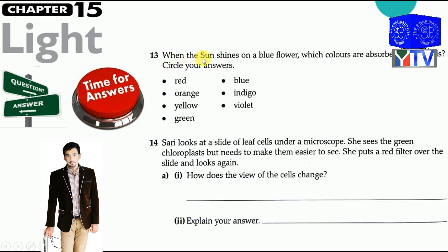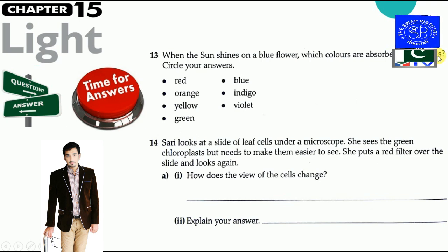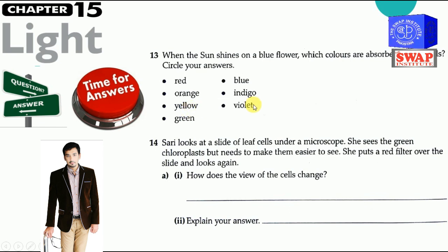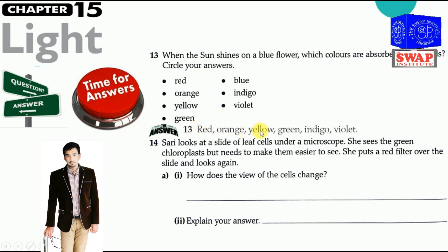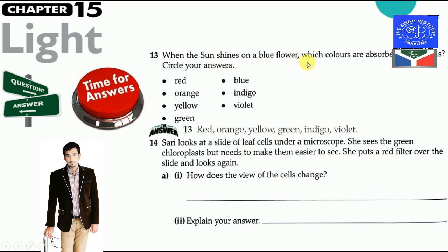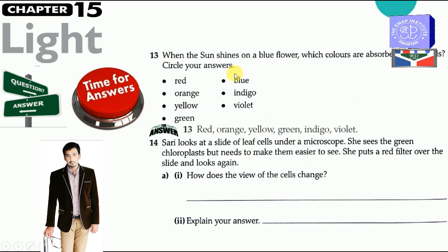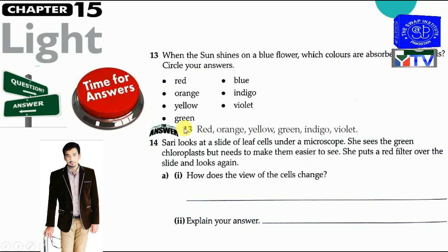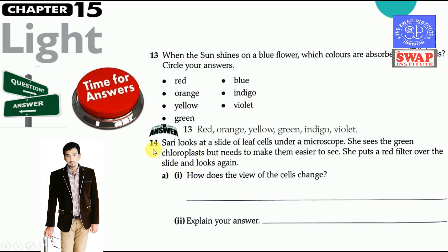Question number thirteen: when the sun shines on a blue flower, which colors are absorbed by its petals? The answer is red, orange, yellow, green, indigo, and violet are absorbed by the petals, and only blue color is reflected back from the petals — that is why we see the blue color of the flower.